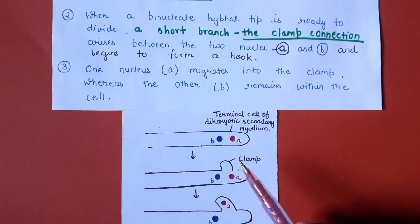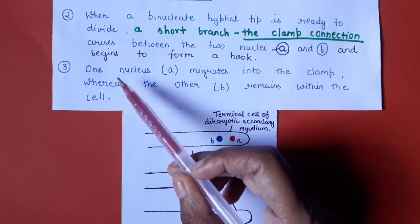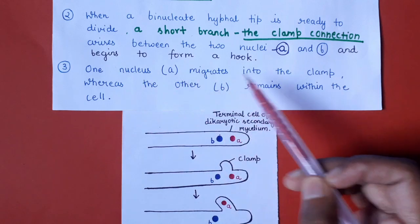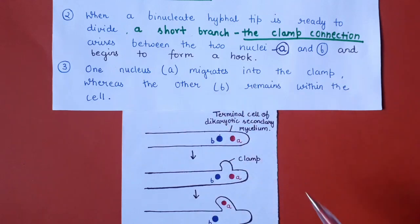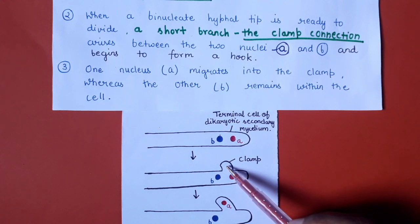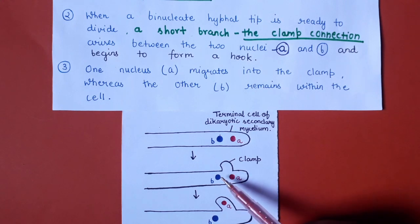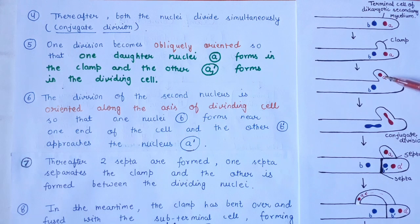One nucleus A migrates into the clamp, whereas the other nucleus remains within the cell. So one nucleus A is now inside the clamp-like structure, and the other nucleus remains in the main cell.